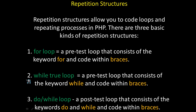The second type of structure we'll look at is a while-true loop. It also is a pretest loop that consists of the keyword while and code within braces. Finally, we'll examine a do-while loop, and this is a post-test loop. That means that it will perform the test after executing, so you can be guaranteed that a do-while loop will execute at least once, and it consists of the keywords do and while and code within braces.